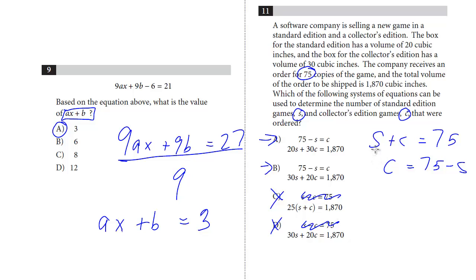Now we'll do the second equation for the volume. And so we know that the standard edition is 20 cubic inches. And the collectors is 30. And so we've got 20 for the standard plus 30 for the collectors. We know that equals the total volume, 1870.